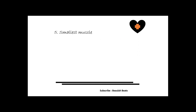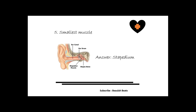The fifth question is: what is the smallest muscle in the human body? The answer is the stapedius. The stapedius is the smallest skeletal muscle in the human body. The facial nerve supplies blood to this part. The stapedius muscle is present in the middle ear, and its action is to control the amplitude of sound waves to the inner ear.